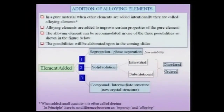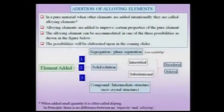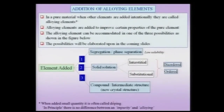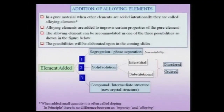To summarize: there are three possibilities when you add an alloying element to a material. This alloying element could be in a large quantity or a small quantity — in parts per million, in which case you would call it doping. The alloying element could go into one of three possibilities with respect to the host lattice: either it could segregate or phase separate (meaning it has very low solubility in the parent lattice), it could form a solid solution (interstitial or substitutional type, ordered or disordered), and finally it could form a compound or an intermediate structure.